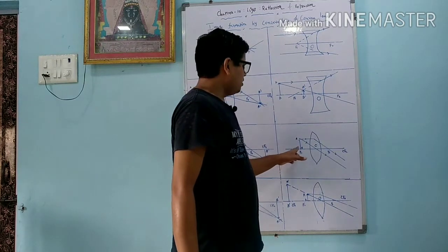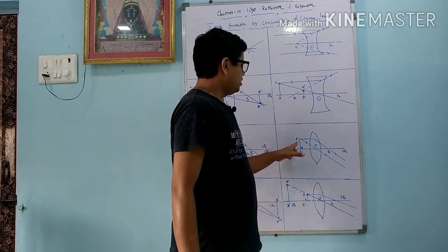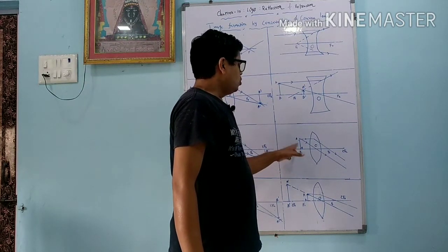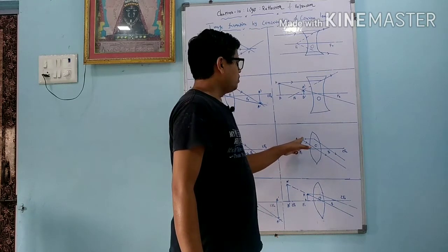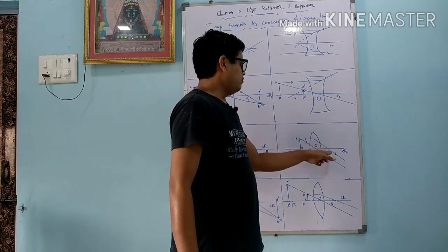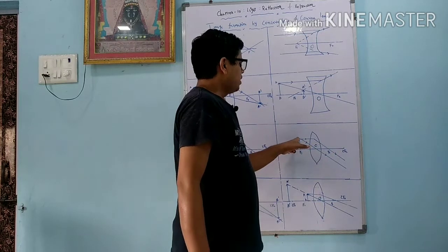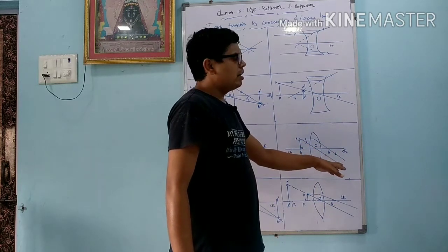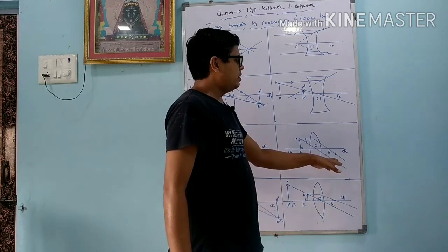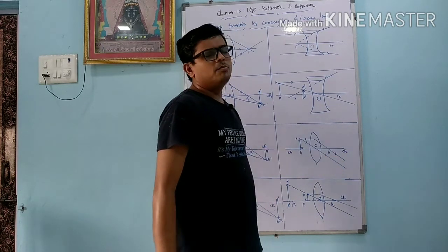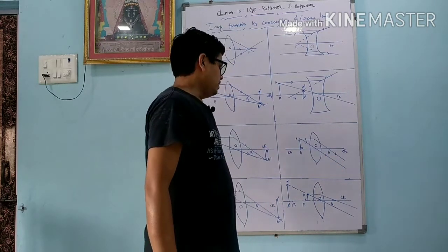Next condition: we put the object AB on f1. Two rays are passed — one ray is going parallel to the principal axis and it passes from f2. The second ray passes from the optical center. We get the image at infinite distance. We get a real and inverted image and the image is obtained on the other side of the lens.